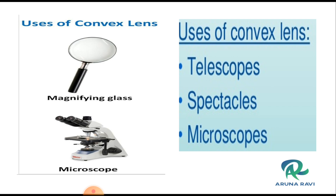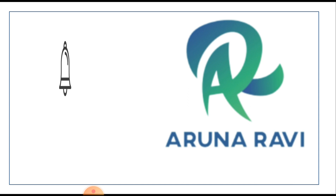What are the uses of a convex lens? A convex lens is a converging lens. We have seen images formed at different positions of the object relative to the principal axis. Convex lenses are used in microscopes, telescopes, spectacles, and various other instruments and equipment. Please subscribe to this channel. Thank you.